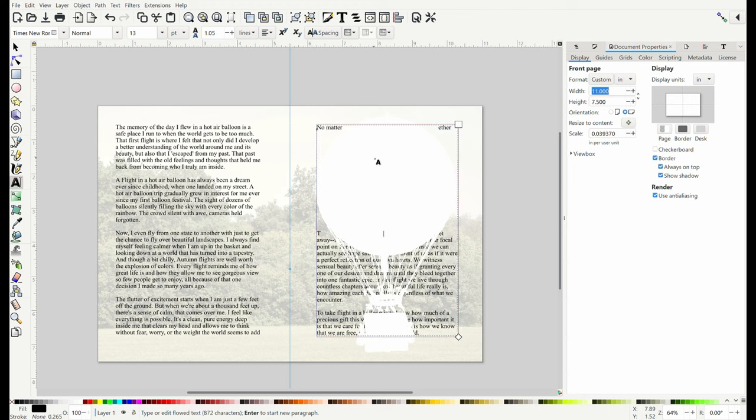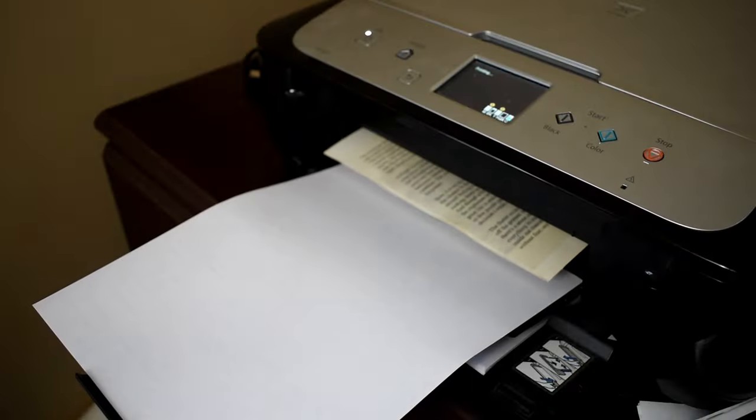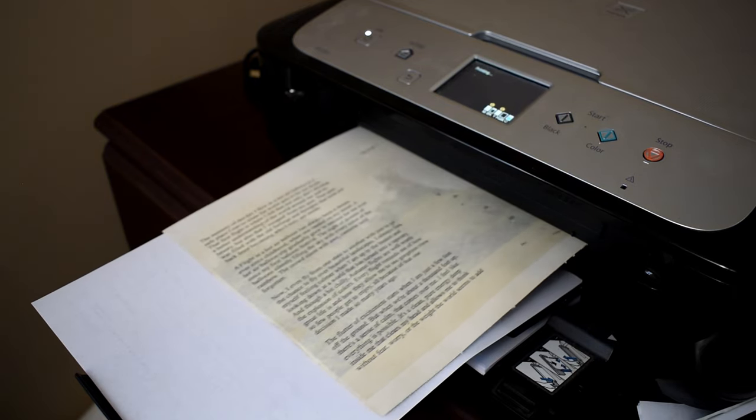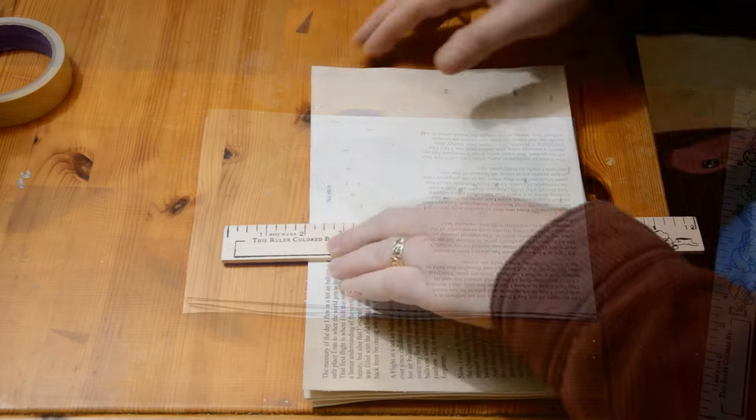And then I'll remove all but a few of those letters on the balloon side of the page to make it look like they're the last bits left after the balloon has left the page. Once I'm happy with the way that all looks, I'll print it out on one of my aged pages, and then trim that and the other aged pages to the right size for the book.